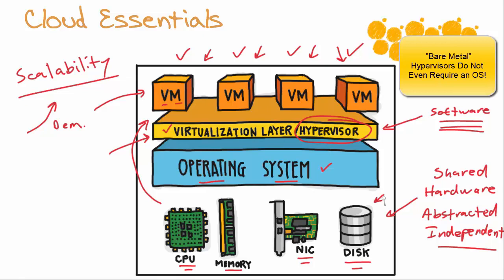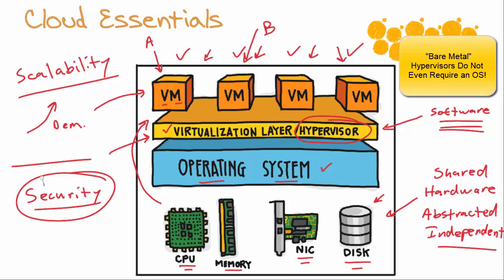But are there any challenges? Let's say this is customer A and this is customer B — does that make you think of a big challenge? The challenge would be security. When we are doing server virtualization with the cloud, we need to make sure, especially in an environment with multiple customers, that the security infrastructure is in place to protect this stuff. A fancy term for having multiple customers sharing this abstracted or independent hardware is called multi-tenancy. Multi-tenancy is the term we use with cloud technologies where we have this shared hardware.